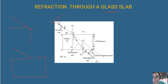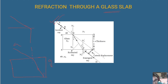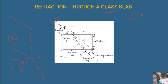We take the incident ray and draw a normal. From air to glass — rarer to denser — the light bends towards the normal. We can name the angles: this is i, this is r1. At the second surface, light moves from glass to air — denser to rarer — so it will move away from the normal, giving angle r2.